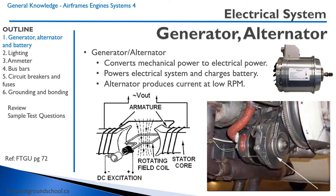Generators and alternators convert mechanical energy to electrical energy. The power from the engine powers the electrical system and charges the battery. The advantage of an alternator over a generator is that it produces current at low RPM, whereas the generator does not.